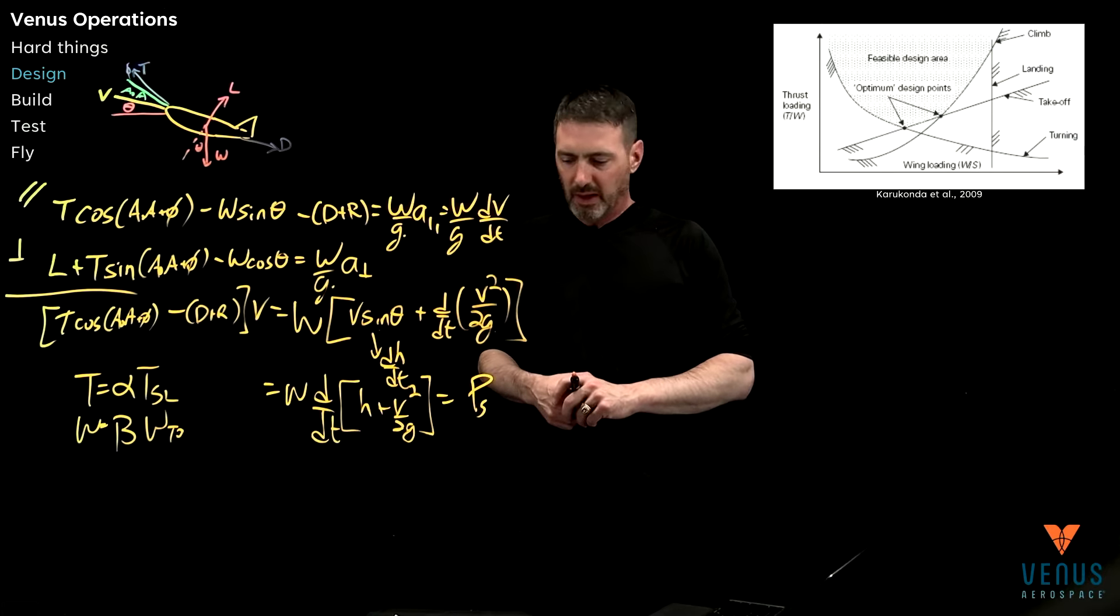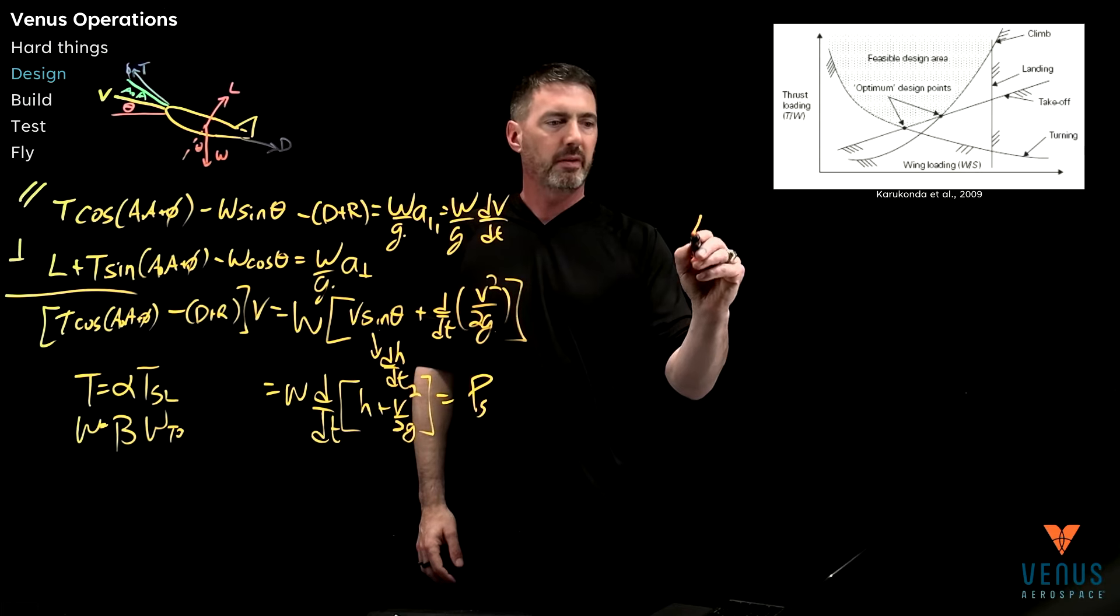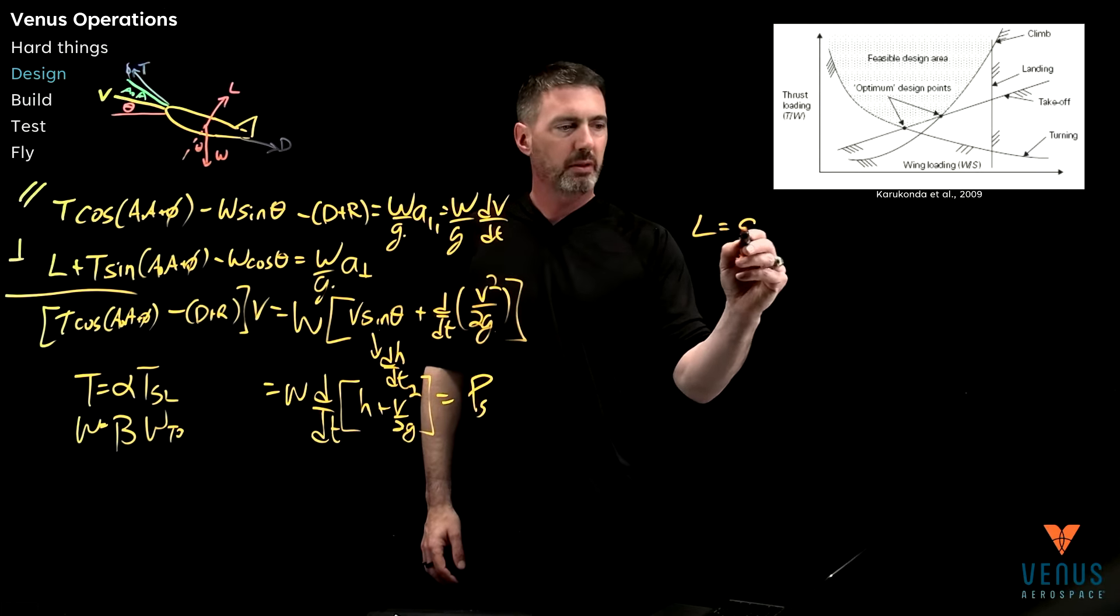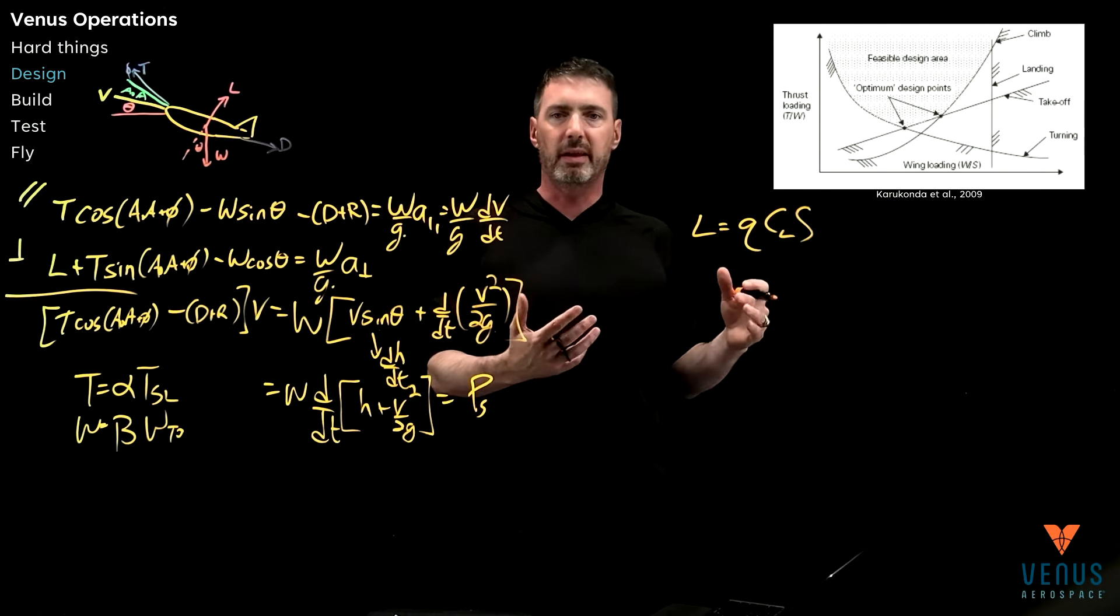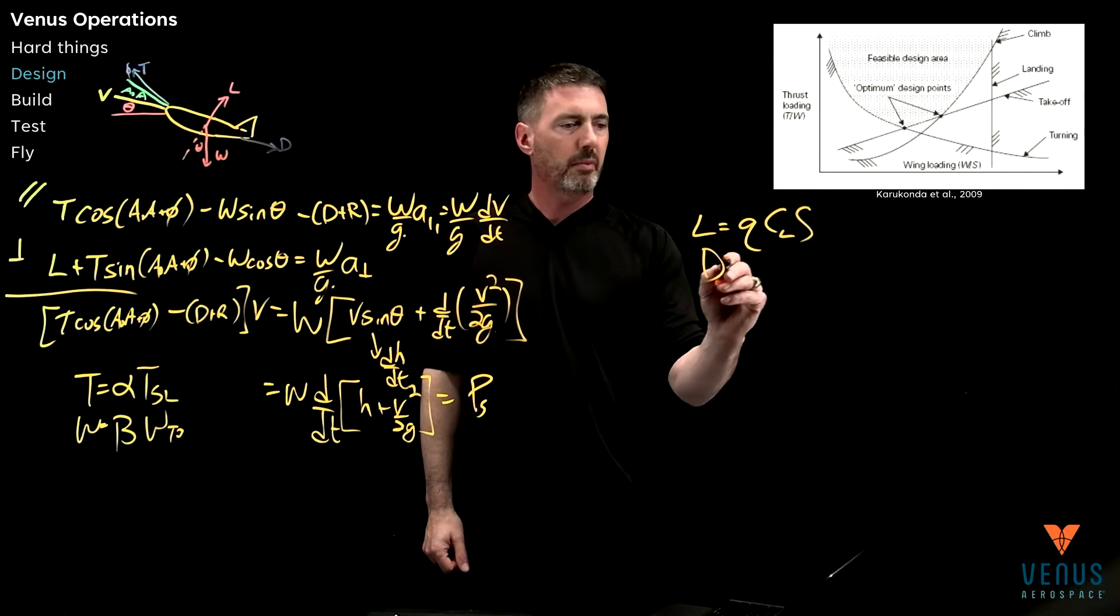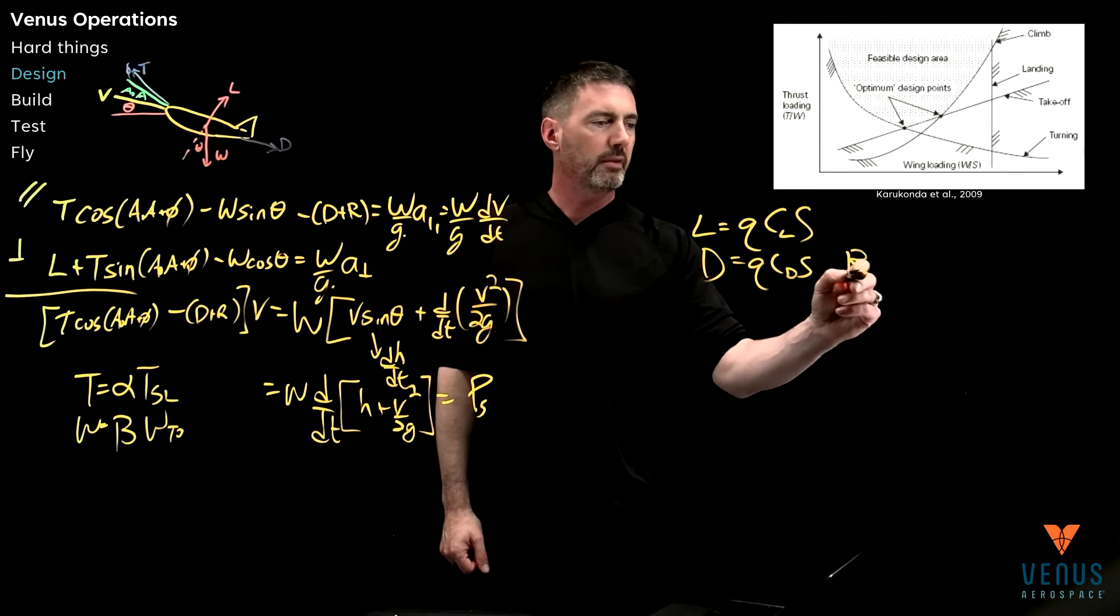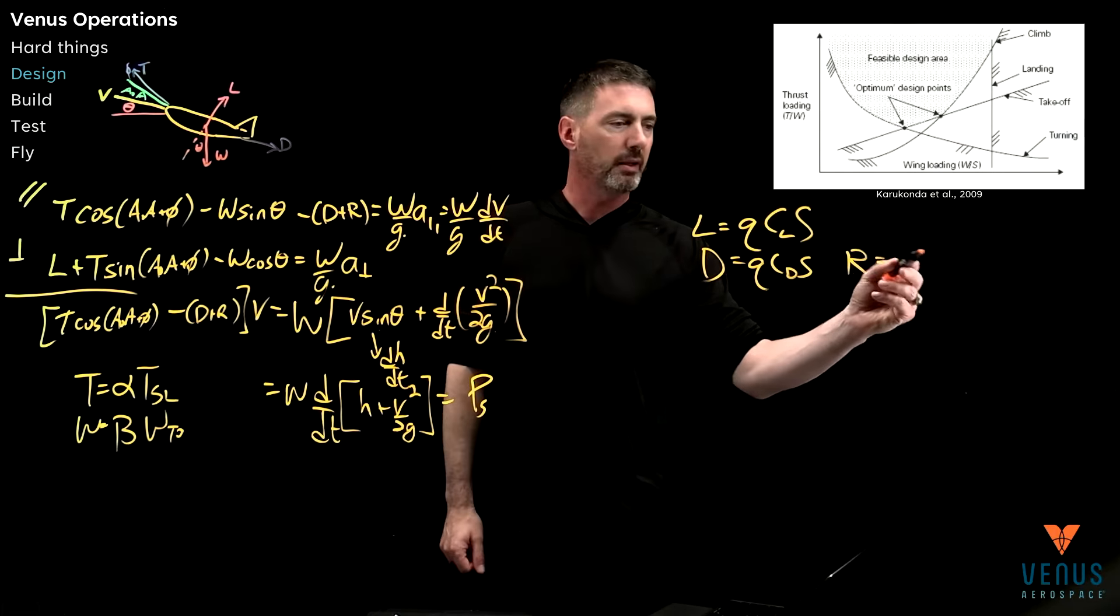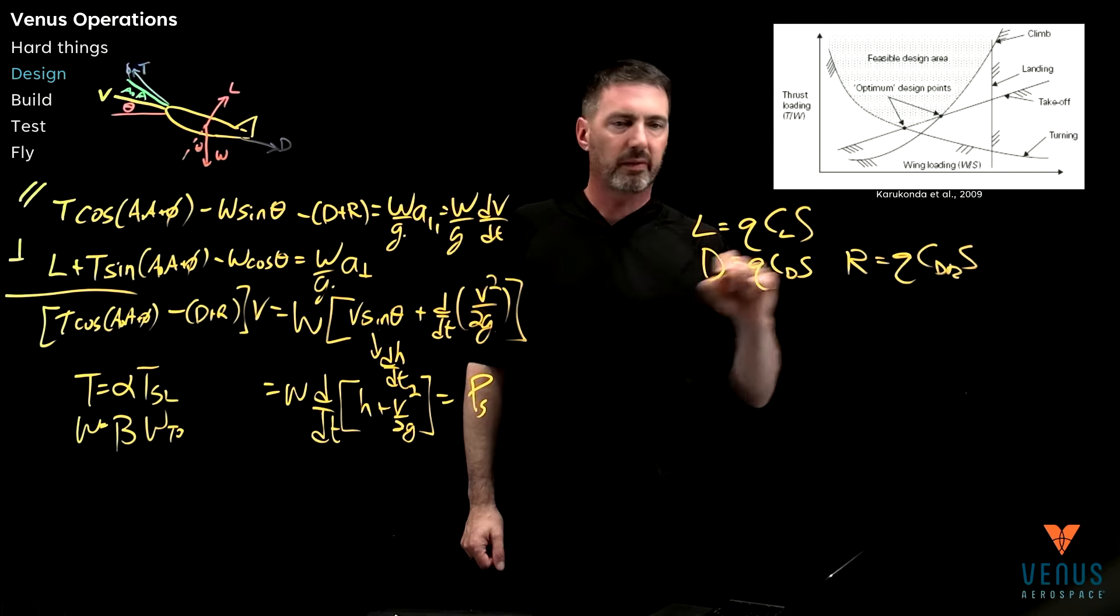The last couple steps on this, we'll take a look at lift. Lift is that dynamic pressure, and there's a lift coefficient times the S, the area of the wings. Then drag, same sort of thing, Q, C drag, S. And of course, I'll have an equivalent for the other drag. We'll just say that's Q, C, the R, S.